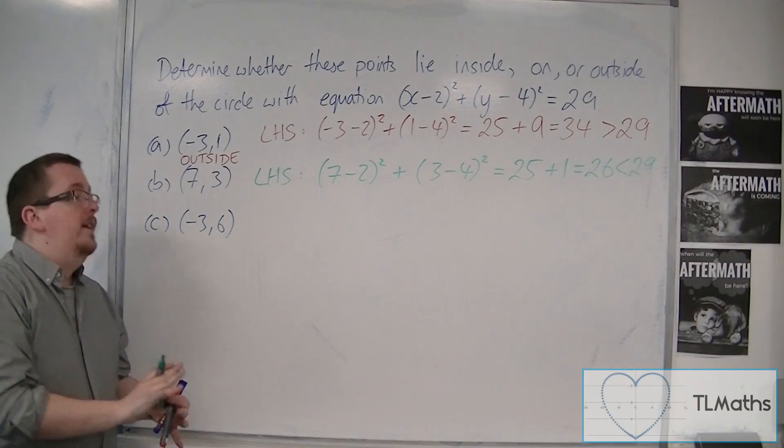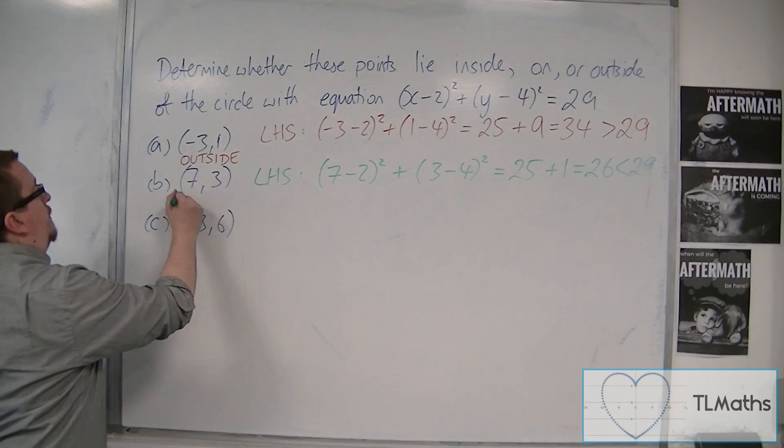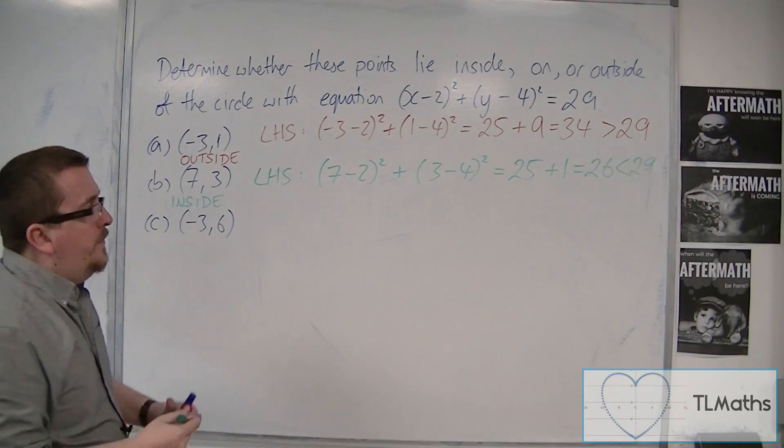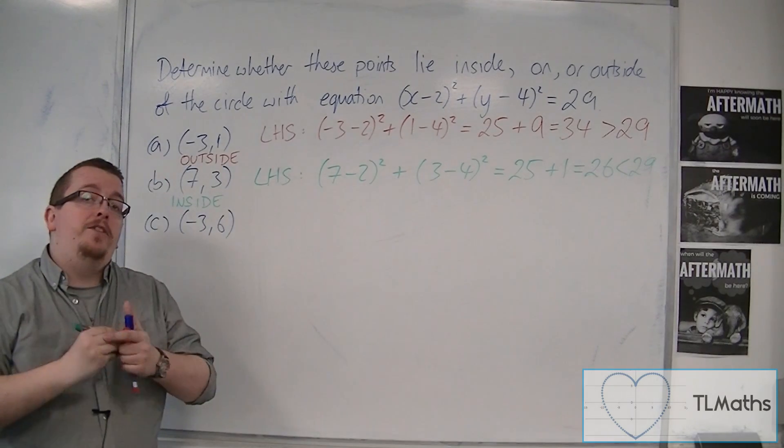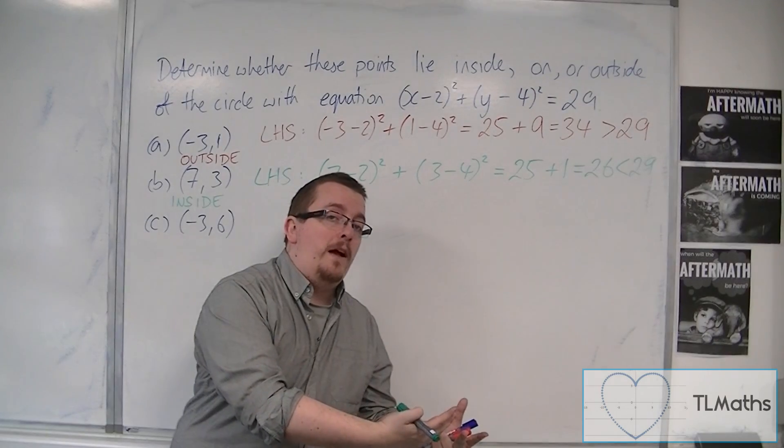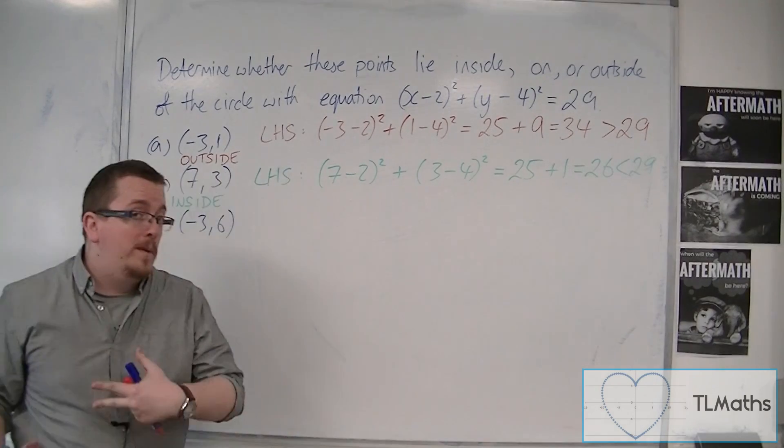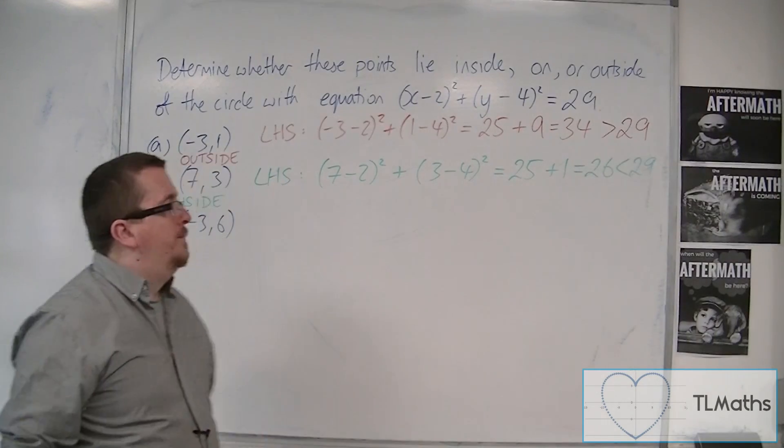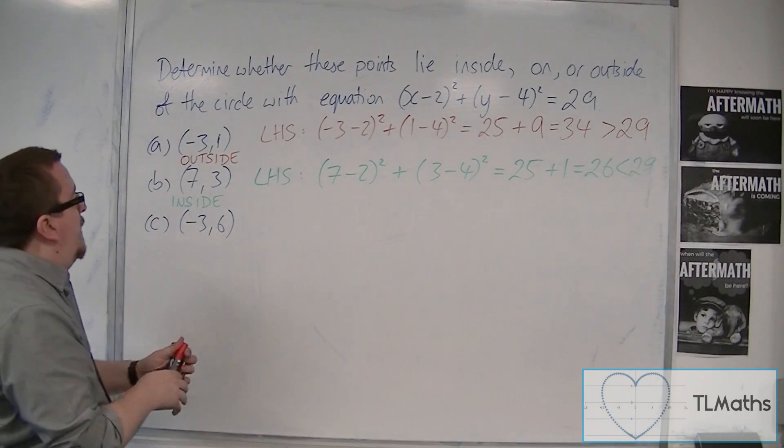And if it's less than, it is inside the circle. So it makes sense that the value that you get, if it's greater than, will be outside. If it's less than, will be inside. And subsequently, if it's going to be equal to, it'll be on the circle. So if we look at the last one, (-3, 6).